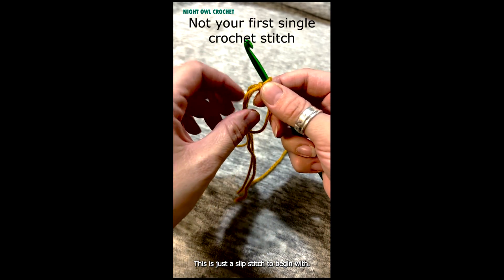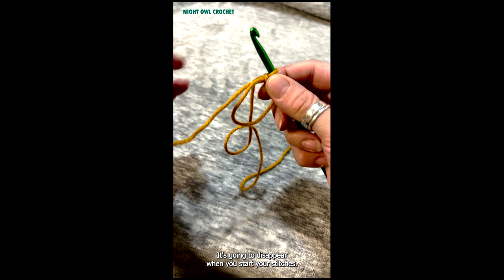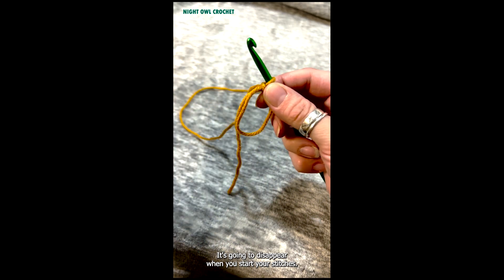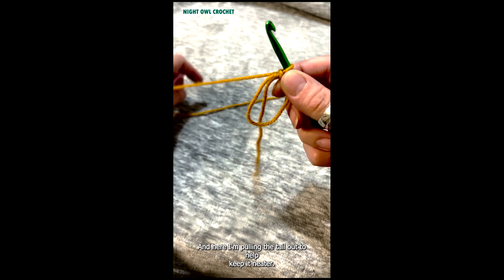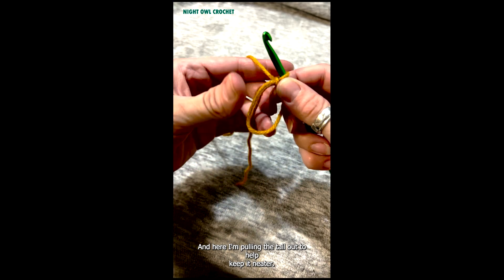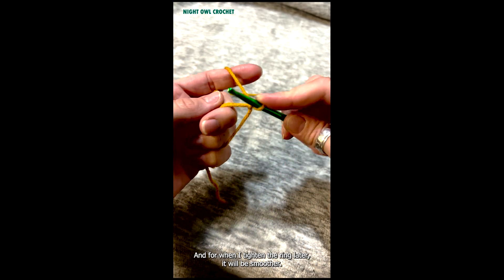This is just a slip stitch to begin with. It's going to disappear when you start your stitches. And here I'm pulling the tail out to help keep it neater and for when I tighten the ring later it will be smoother.